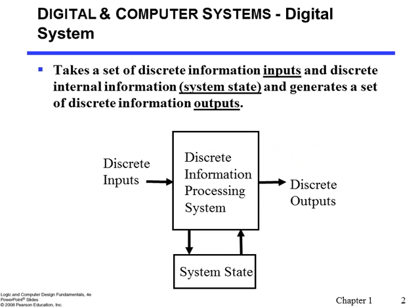A digital system in general takes a set of discrete inputs and produces a set of discrete outputs. The system may store some information about what happened in the past — that is called the system state. As the picture shows, the system state represents what happened on the input in the past, and that information is stored. The output is a function of the current input as well as the system state. That is generally called a digital system.